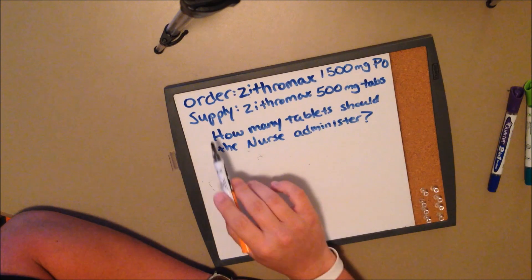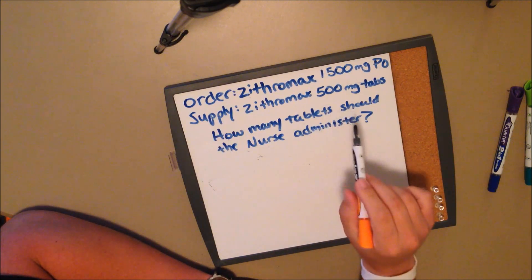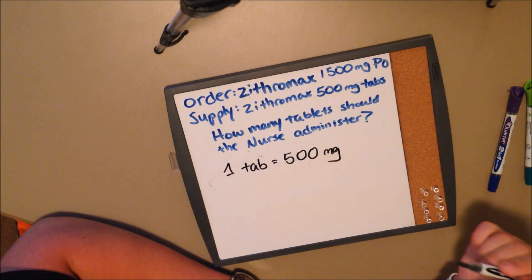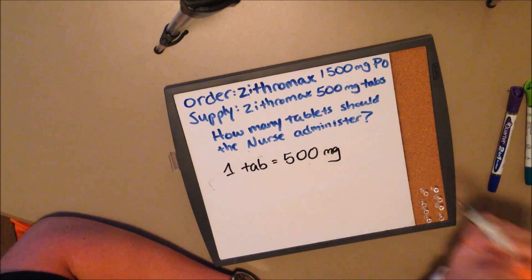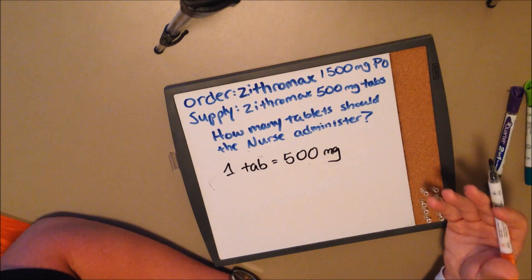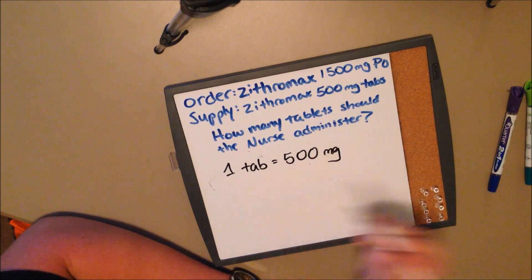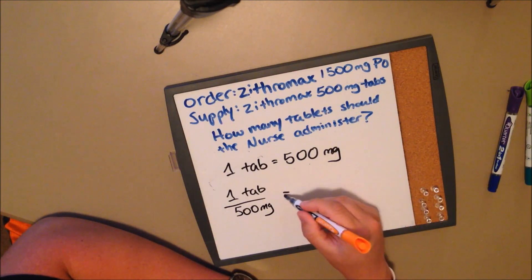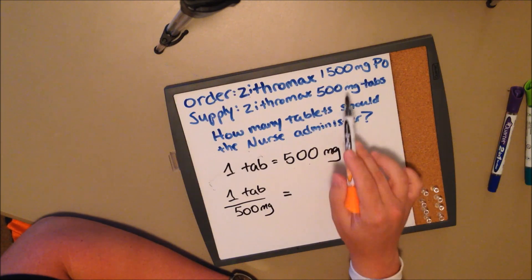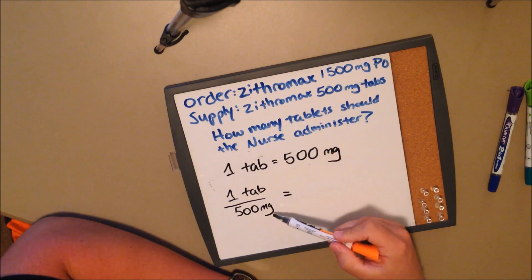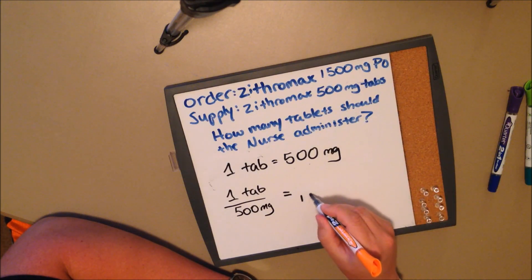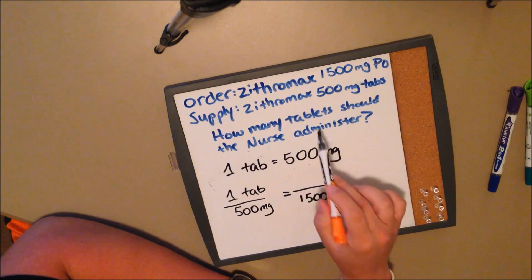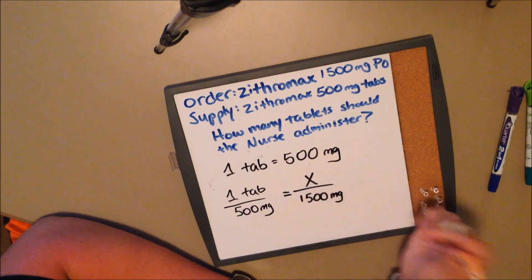What you can do is look at your supply. You have 500 milligram tablets, which means one tablet equals 500 milligrams. And what your patient needs is 1500 milligrams. Here's one way you can do it: one tablet equals 500 milligrams, and you know what you need is 1500 milligrams. Since milligrams is on the bottom, make sure you put milligrams on the bottom over here. So 1500 milligrams is what you need, and X tablets is the unknown.